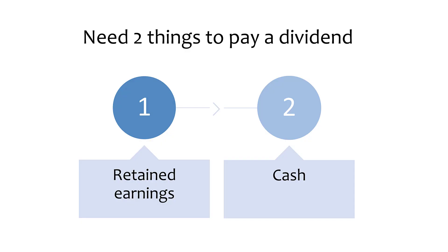Most dividends are cash dividends. To pay a dividend, a company must have both enough retained earnings to declare the dividend and enough cash to pay the dividend.